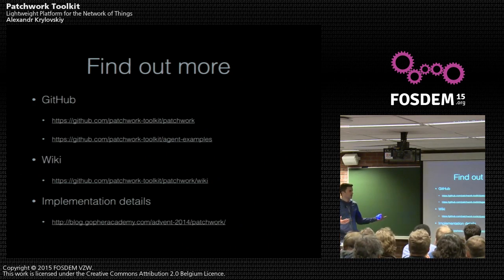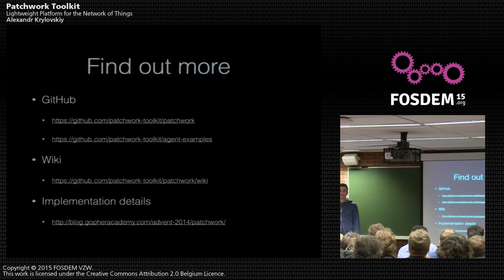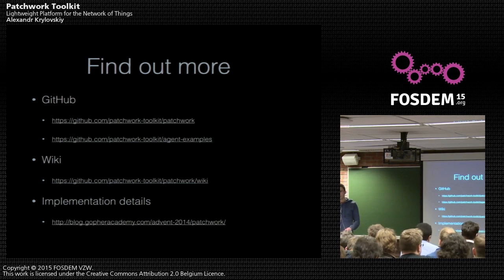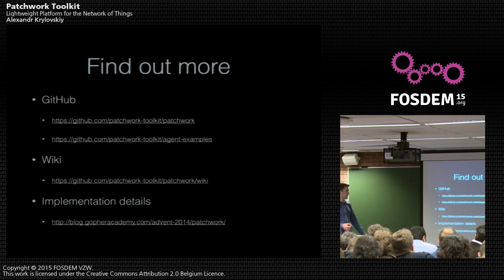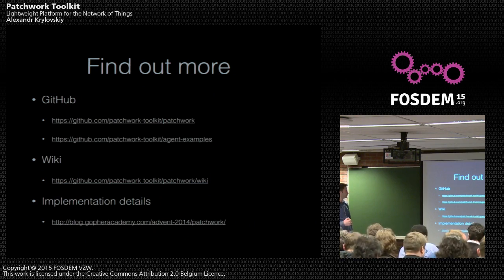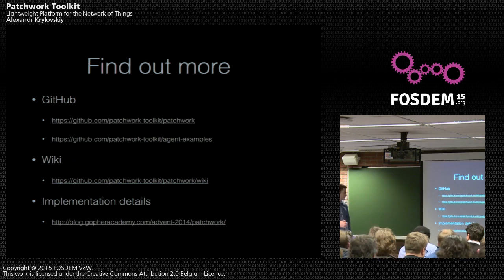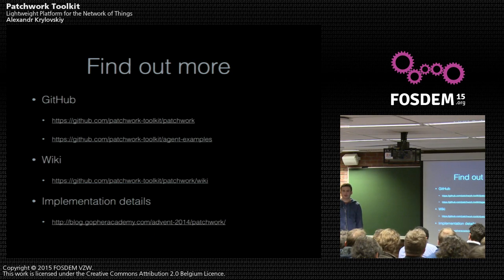If you want to find out more, Patchwork is open source with an MIT license. You can go to GitHub and find it. We have an agent examples repository where you can find stuff like how to connect to a sensor via GPIO on a Raspberry Pi — we have about a dozen agents right now. Pull requests are welcome. We have a wiki where we're trying to document things properly and make it easy for people to start. We recently published an article on the Gopher Academy blog for their advent 2014 program where you can find implementation details of Patchwork and how Go is used productively for IoT.